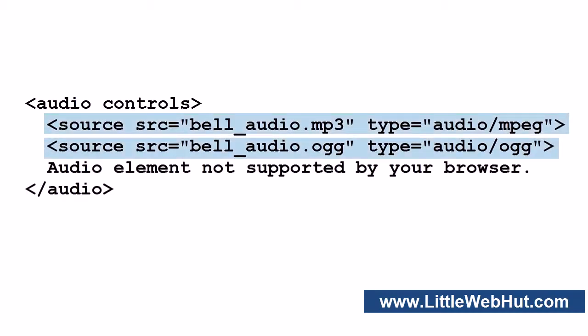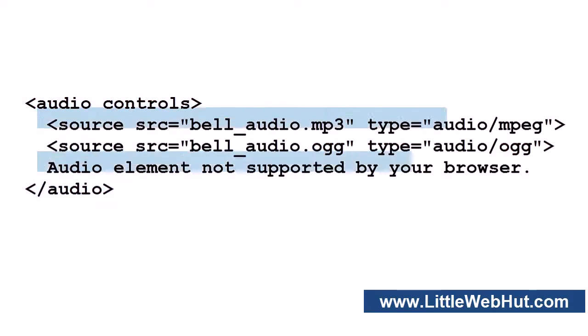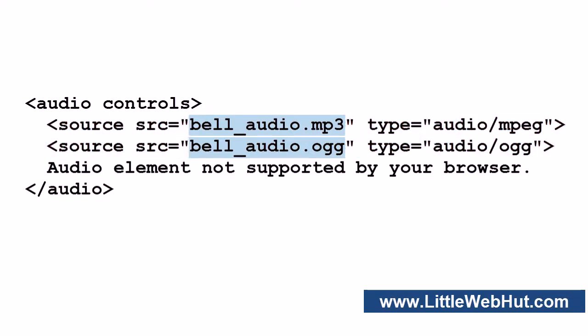Here is the other method for specifying audio source files. This method uses source elements, which are added in between the start and end audio tags. You can add multiple source elements, which allows you to specify multiple audio files. With this method, if the browser does not support the first audio type, then it can try the next one.